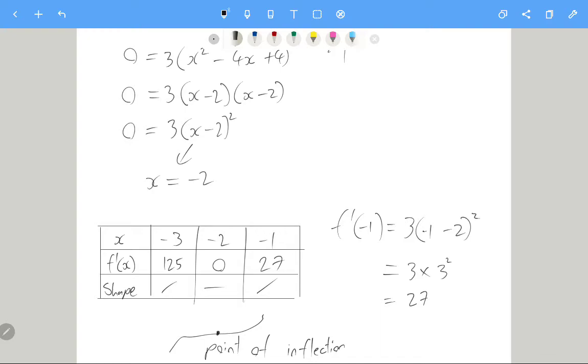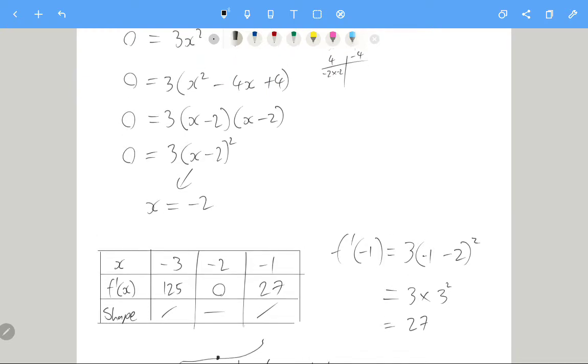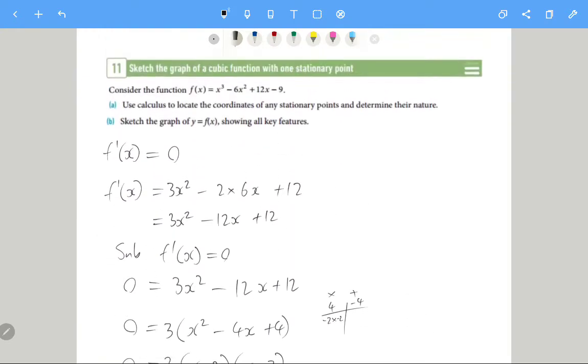All righty. So now that we've classified our one point, now let's find out its y-partner. So let's work out the y-partner. So we're looking at f(-2). All right, so we get -8, -24, -24, -9, and we get -65.